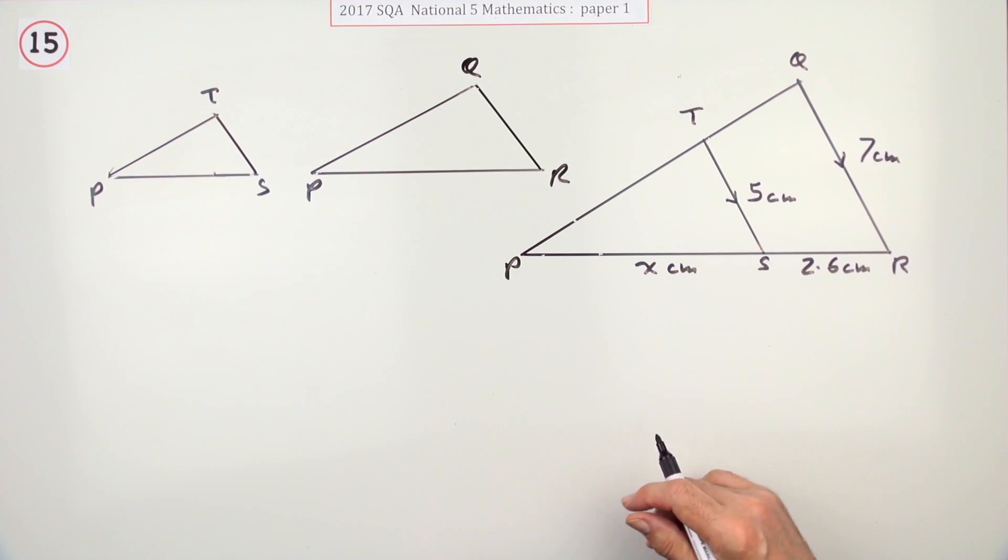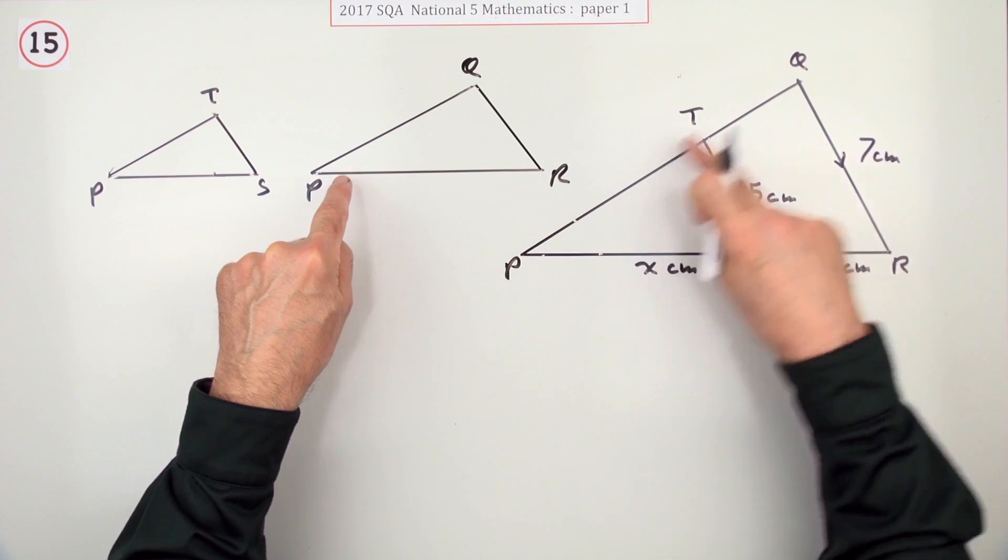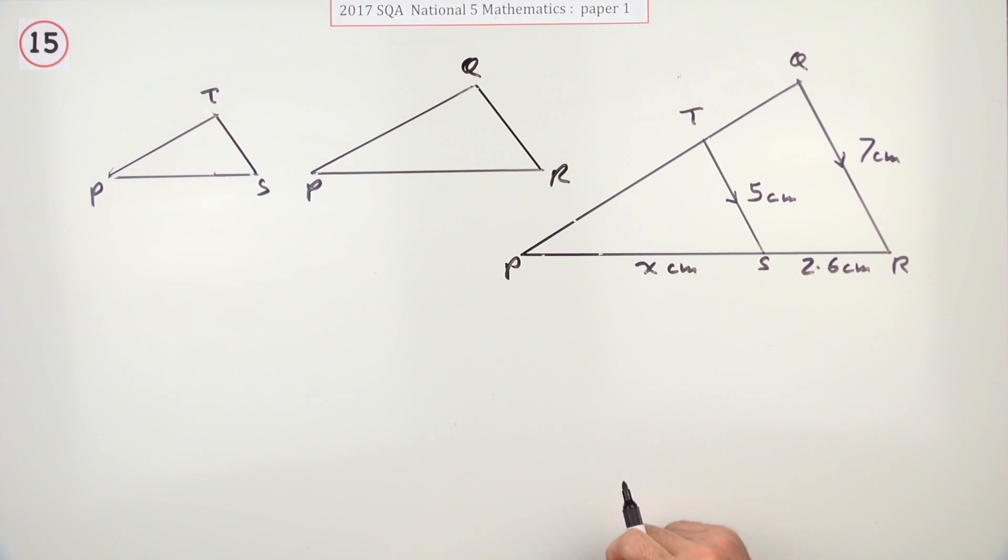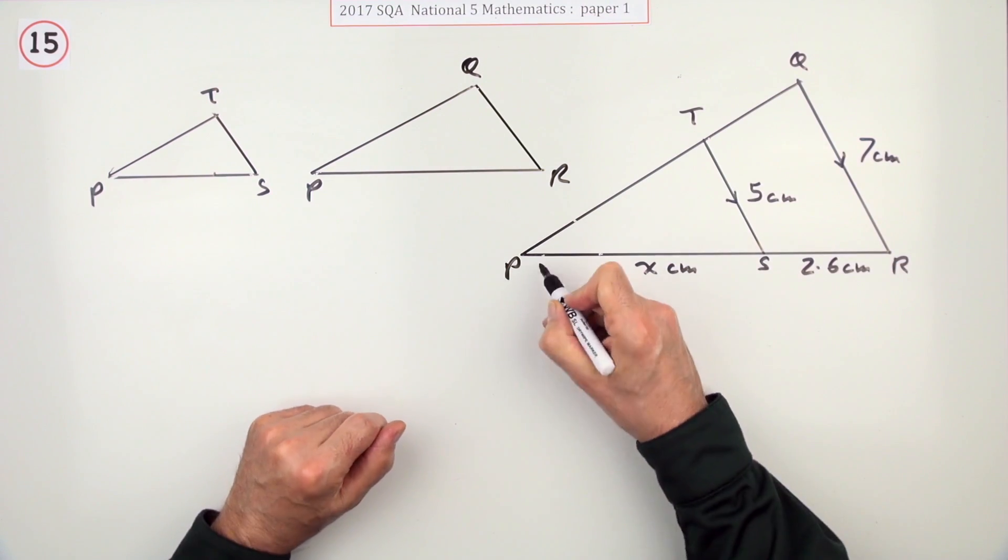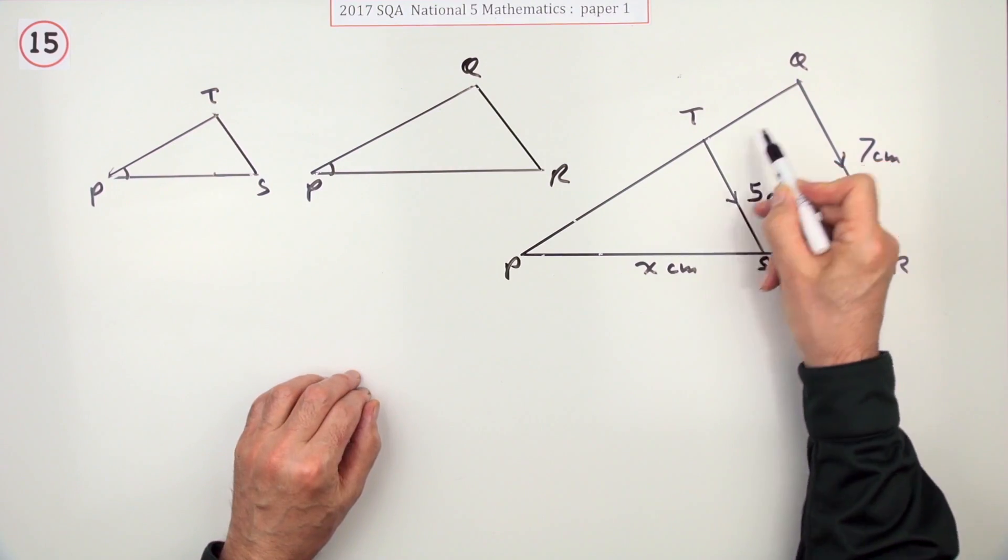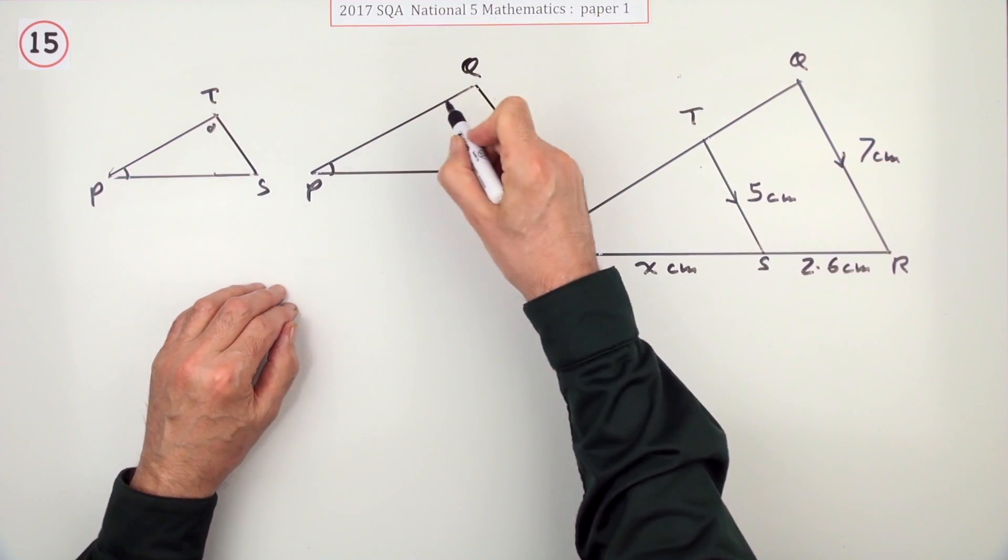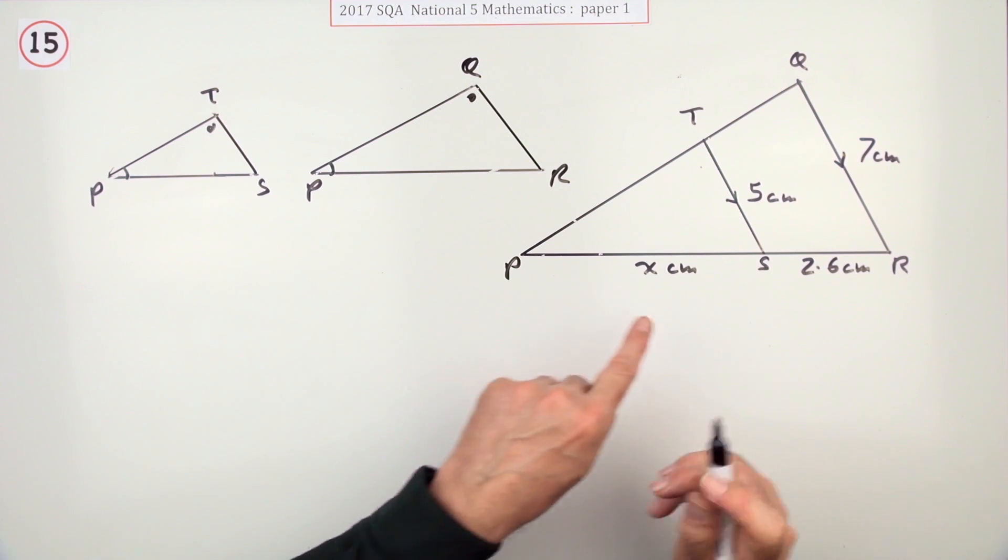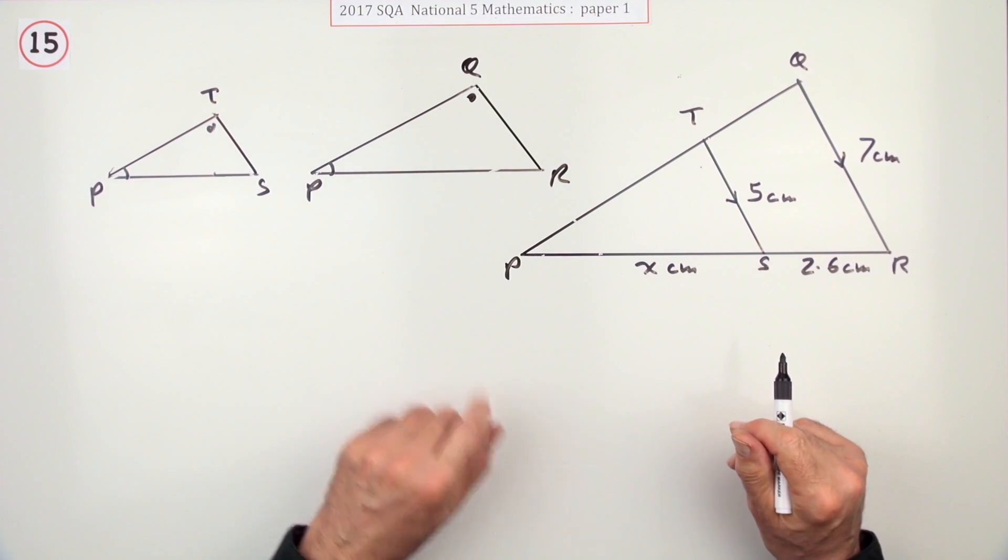There's the small triangle and there's the large triangle, which are similar because they've got the same angles. Obviously they share this angle. And because they've got parallel lines, those two are the same and all three are the same. So one's just an enlargement of the other one.